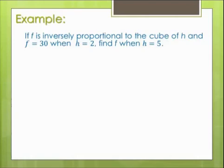First step, write the equation in variable form. So an inverse variation is going to be a division problem. So f equals k over h cubed. It's going to be h cubed because it's the cube of h. Alright, so if I cube h in the initial equation, then I have to cube h all the way through the problem.